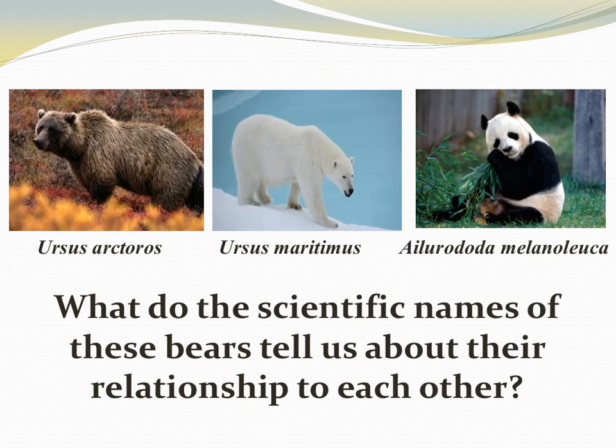The more taxa two organisms have in common, the closer their relationship. For example, the grizzly bear and the polar bear belong to the same genus, Ursus, indicating a close relationship. The panda bear belongs to a completely different genus and is therefore a much more distant relative. That's all for now — I hope this helps, and as always, happy studying!